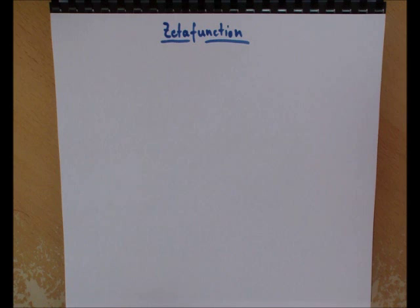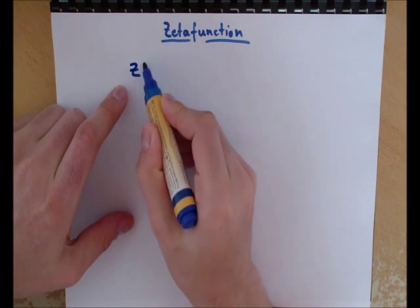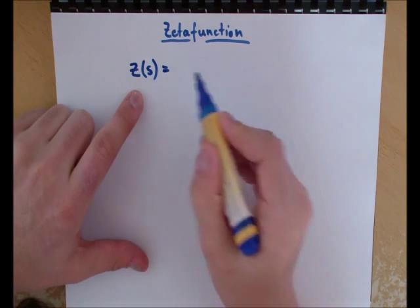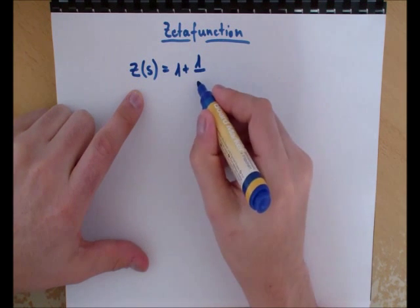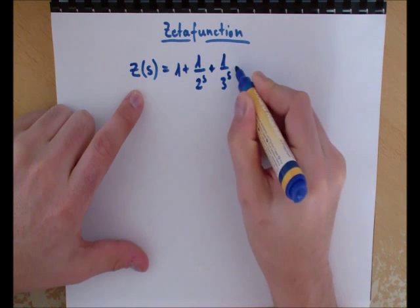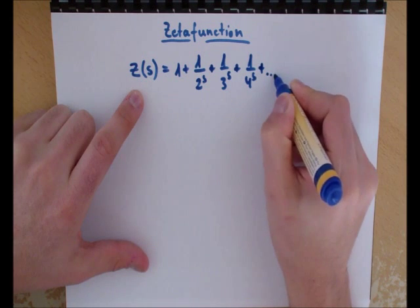This is the most important representation. Now I'm switching to complex variables. It looks like this: z(s) = 1 + 1/2^s + 1/3^s + 1/4^s, and this goes infinitely forward.